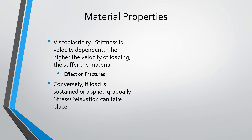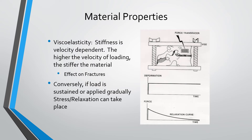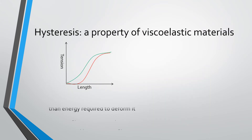An example of the opposite effect: a vertebral motion segment of two vertebrae and an intervening intervertebral disc was compressed in a machine at a constant rate. The diagram shows that the longer compression took place, the less force it took to cause the compression — the bone effectively softens the longer compression is applied.